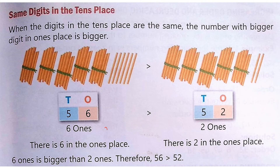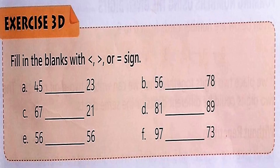For example, 37 and 39: the first digits are both 3, so we look at the ones place. This is 7 and this is 9, so 9 is bigger. Therefore the mouth opens towards 39. The open mouth always faces towards the greater number.